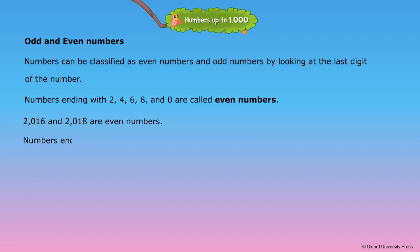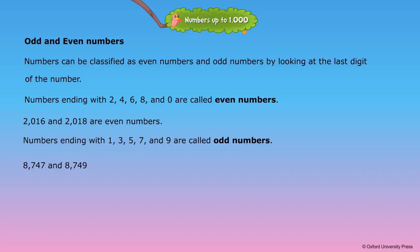Numbers ending with one, three, five, seven, and nine are called odd numbers. Eight thousand seven hundred and forty-seven and eight thousand seven hundred and forty-nine are odd numbers.